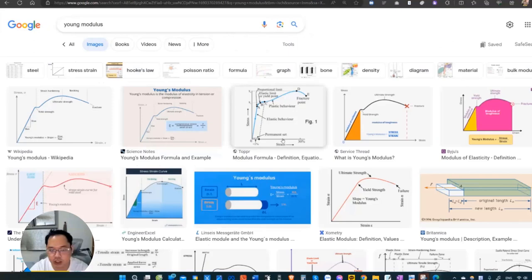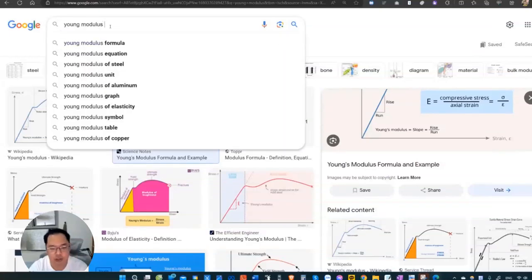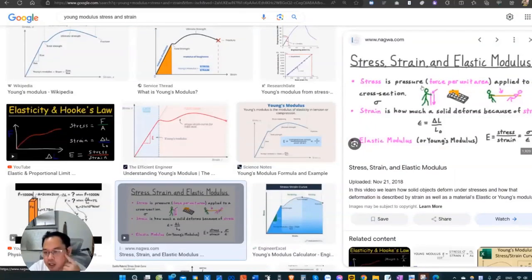What is stress and what is strain again? Stress is pressure applied to a cross section. So stress here is actually pressure. And strain is the proportion, the percentage of the extension or compression.